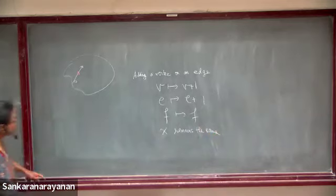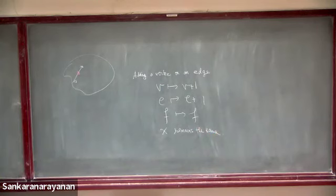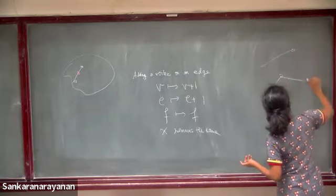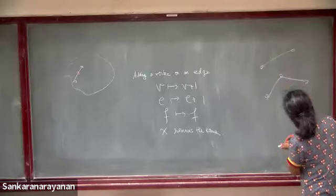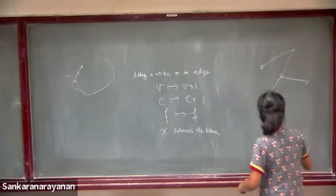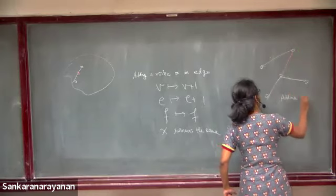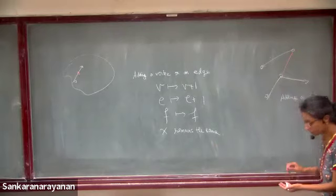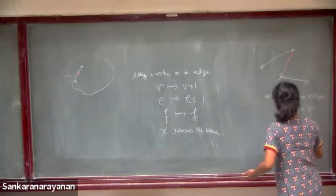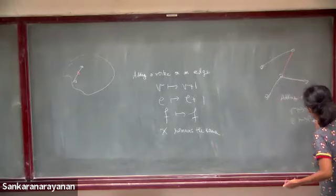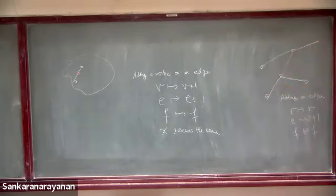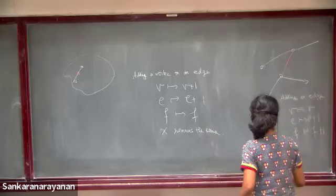What are some other operations needed for induction? Adding a new edge between two existing vertices: V remains the same, E becomes E+1. What happens to F? F becomes F+1, because earlier those two regions were a single face but now they have become two different faces. So again chi remains the same.